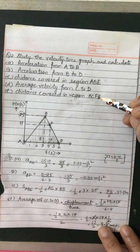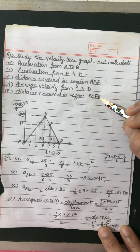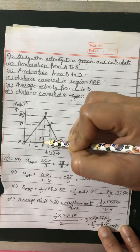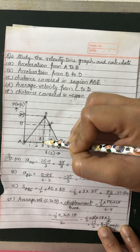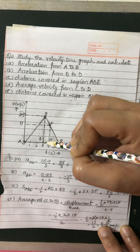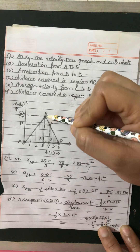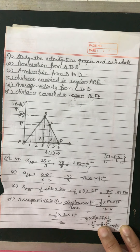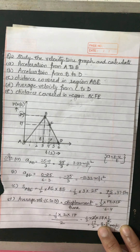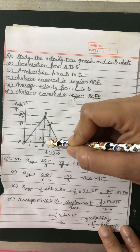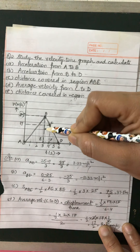Now see part D: distance covered in the region BCFE. The shape BCFE is a trapezium. To find the distance, we calculate its area.